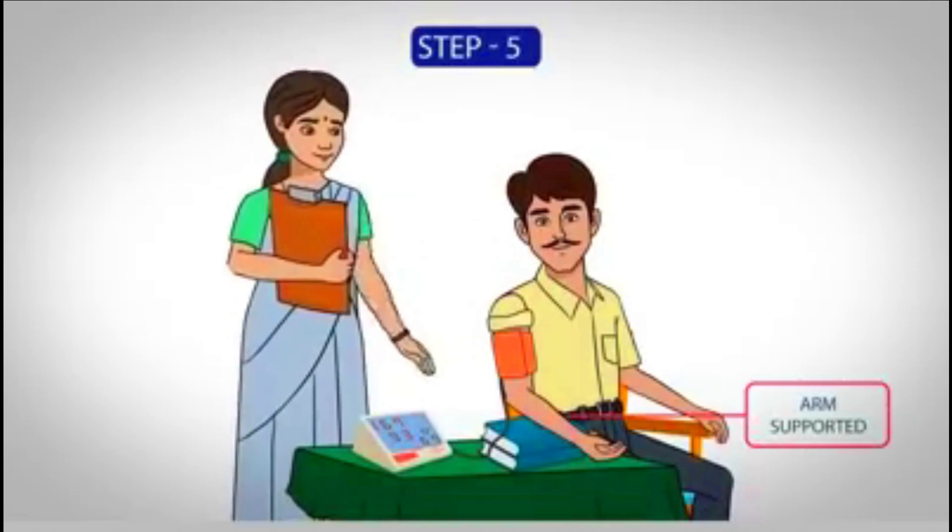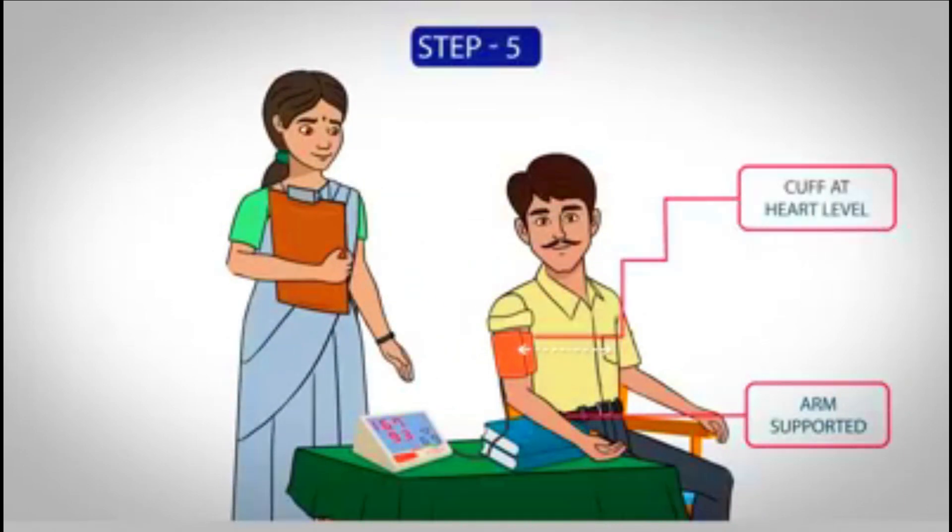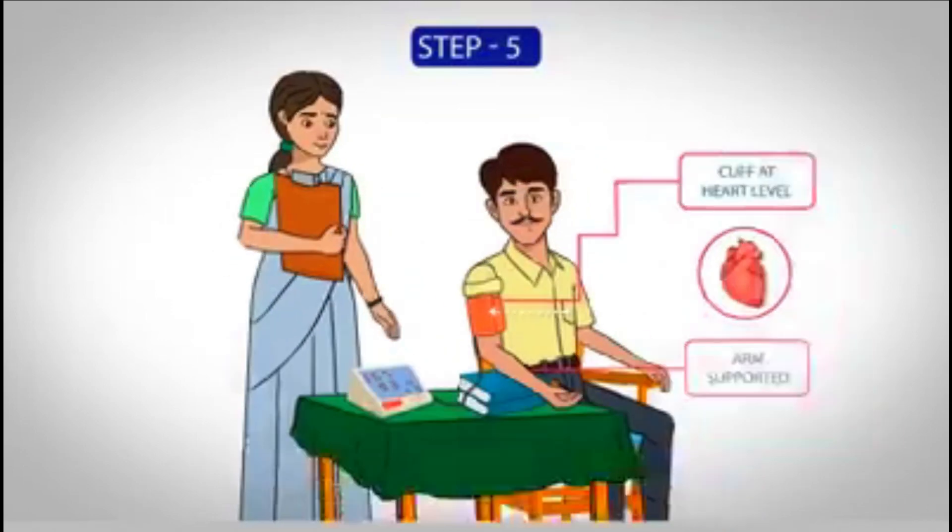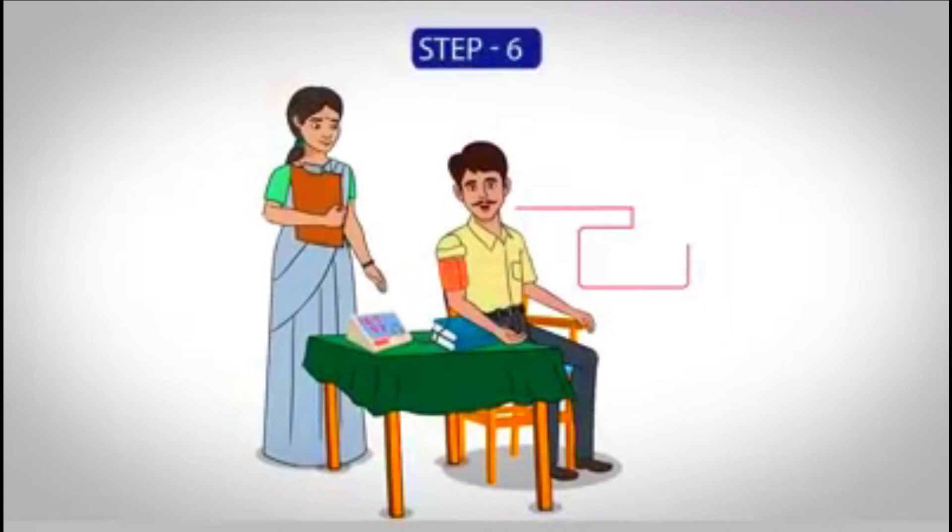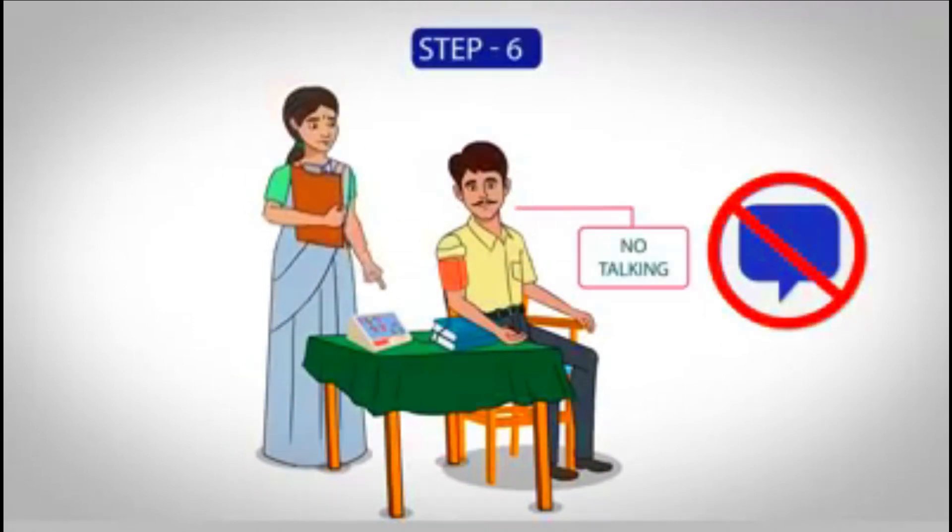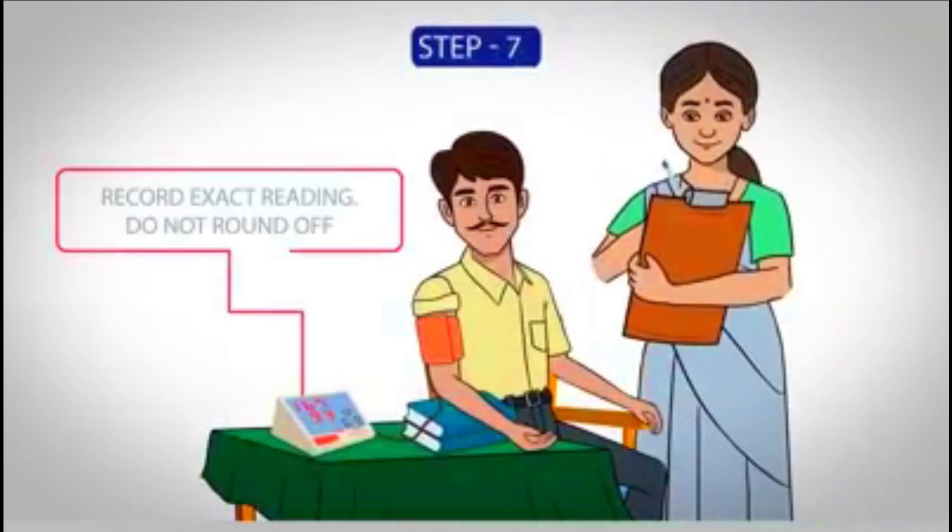The arm should be ideally supported on the table and the cuff should be at the level of the heart. You should not be talking during the measurement. Record the exact reading according to the blood pressure and do not round it off.